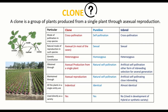Before moving to clonal selection, let's discuss what a clone is and its differences from a pure line and an inbred line. A clone is a group of plants produced by asexual reproduction from a single plant. It may be by any mode — it may be by runner, by bulb, or by tuber. The plant produced should be by asexual mode, not sexual mode involving crossing between two parents.